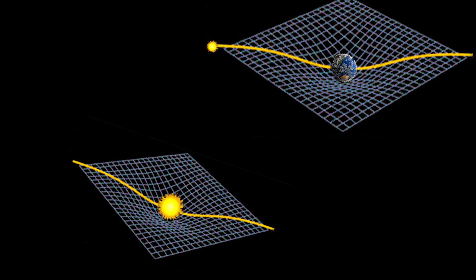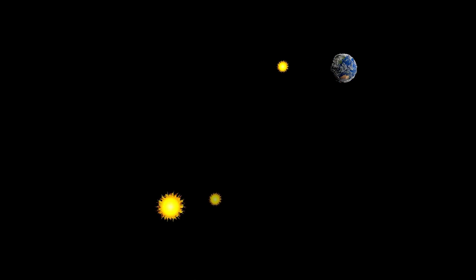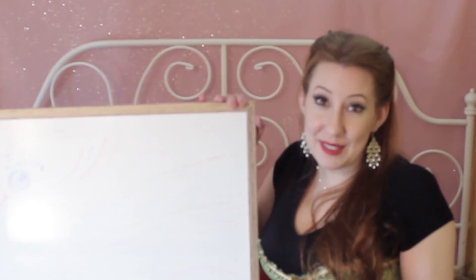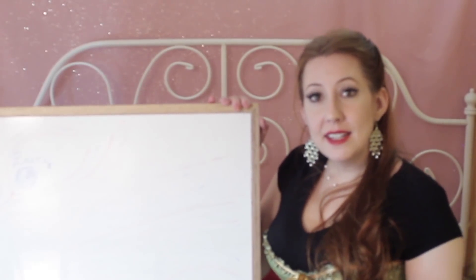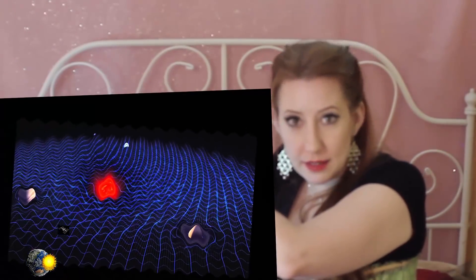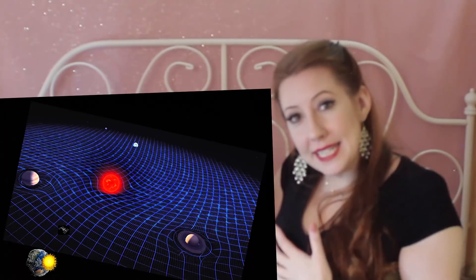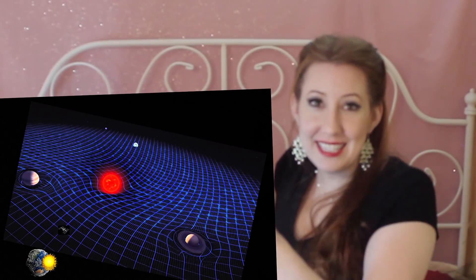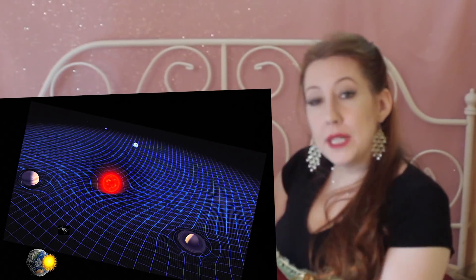The photon creating its past history of where it traveled through space only has the information at time two to recreate its trajectory. So it has to take the space-time curvature as it exists at time two to plot its path history. It cannot create a path history for a Sun, Earth, and space-time curvature as they were eight minutes ago, because it has no way of formulating that information from the information available in the moment of detection.